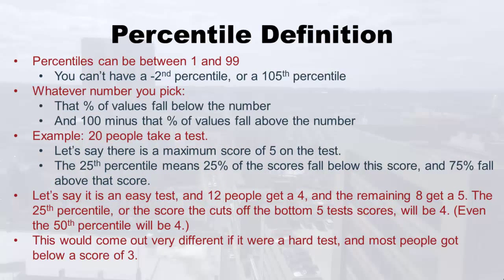Here are some rules about percentiles. First, the percentile must be between 1 and 99 — you can't have the negative second percentile or the 105th percentile. Then, whatever number you pick, that percent of the values fall below that number, and 100 minus that number of the values fall above it. We'll give an example: 20 people take a test with a maximum score of five.